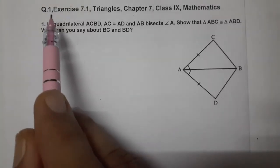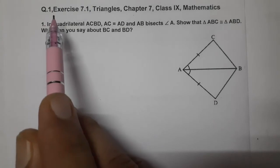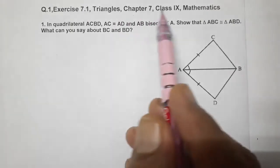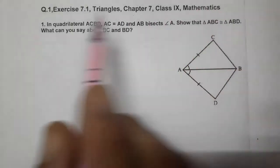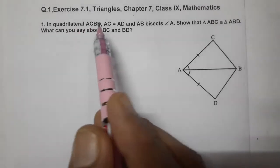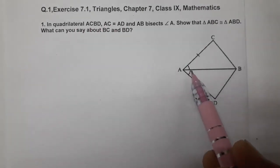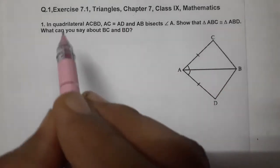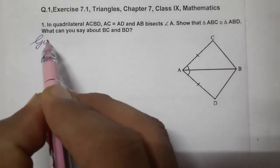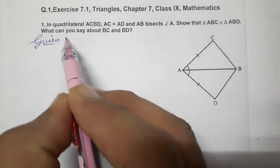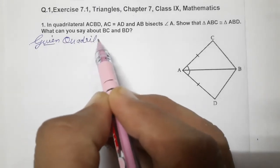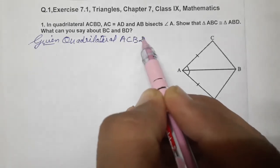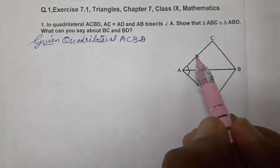Hello students, let's do question number one of exercise 7.1, chapter seven Triangles, class ninth mathematics. In quadrilateral ABCD, this quadrilateral is given to us. Given: quadrilateral ACBD where AC equals AD.